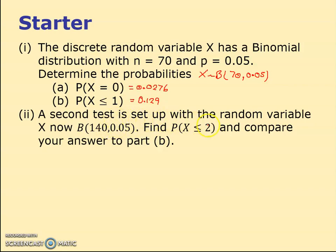A second test is set up with random variable X, B(140, 0.05). It's exactly the same thing but just twice as often. Find the probability that X is less than or equal to 2. When I did it 70 times, what's the probability of getting 1 or less? Now if I do it twice as many times, what's the probability of getting twice as many, 2 or less?